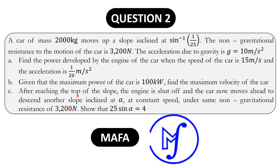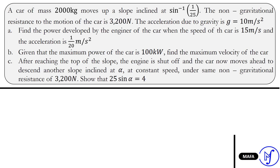Part (c): after reaching the top of the slope, the engine is shut off and the car moves ahead to descend another slope inclined at angle alpha, at constant speed under the same non-gravitational resistance of 3200 Newtons. Show that 25 sin α = 4. This question is under the topic work, energy and power — pay keen attention to the concepts that will be explained.